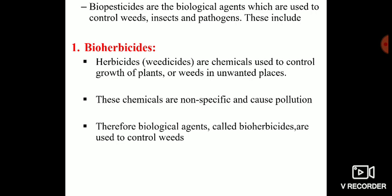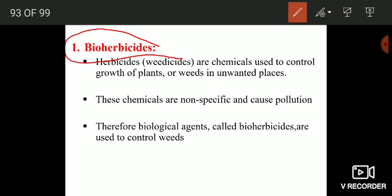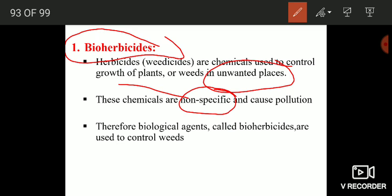Finally, biopesticides are biological agents used to control weeds, insects, and pathogens. They fall into two broad categories: bio-herbicides and bio-insecticides. Before discussing bio-herbicides, let's look at the drawbacks of chemical herbicides. Chemical herbicides are chemicals used to control the growth of weeds in crop fields, but unfortunately these chemicals are non-specific and affect other plants, including the crop plants themselves.